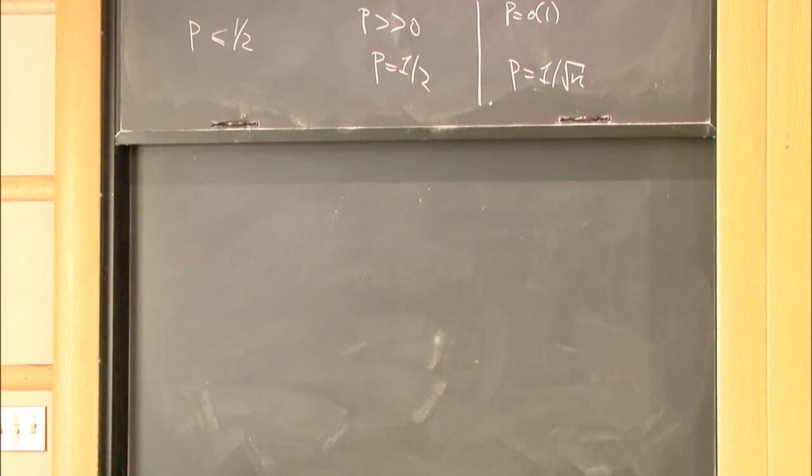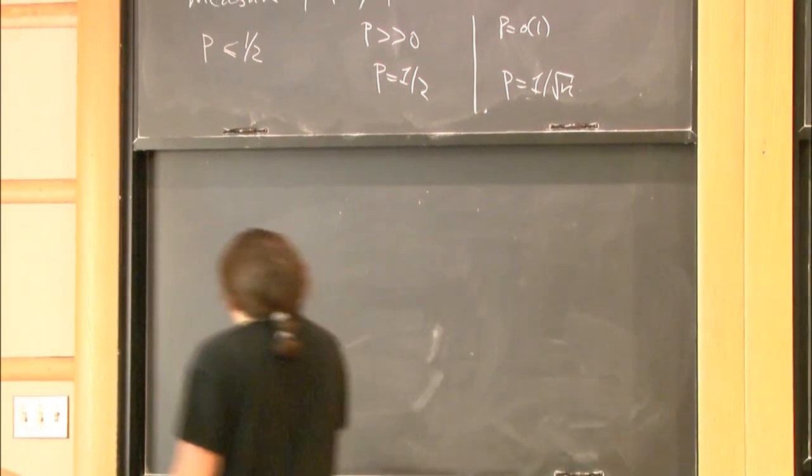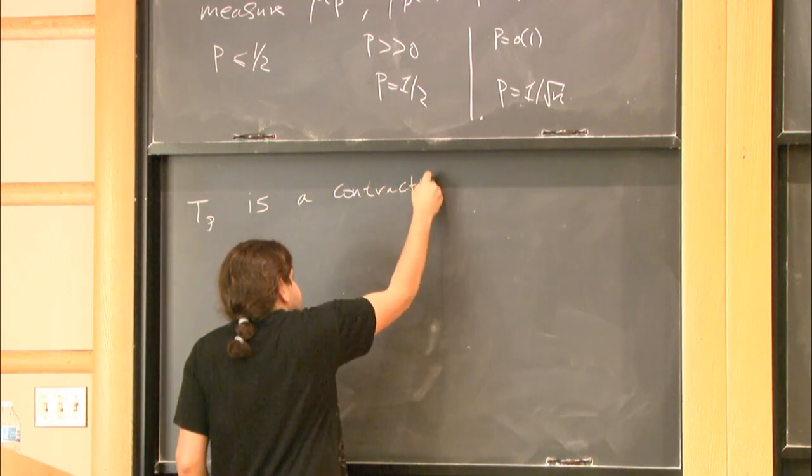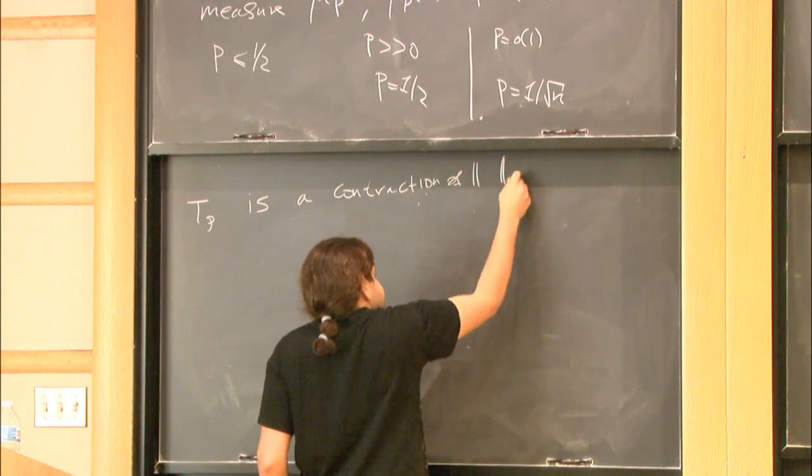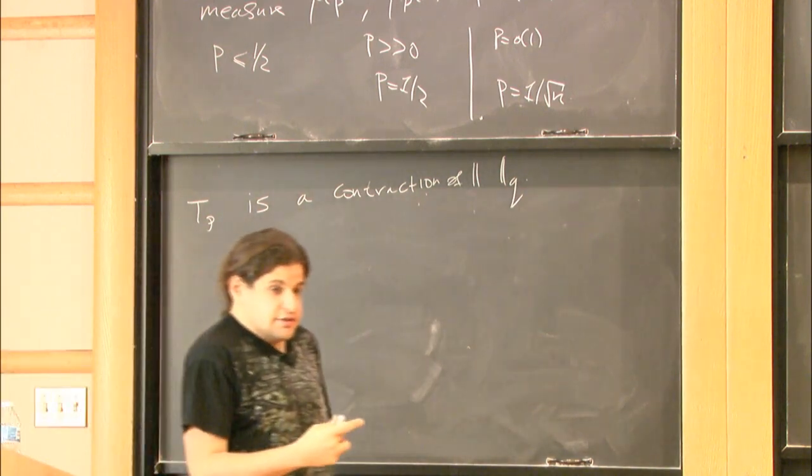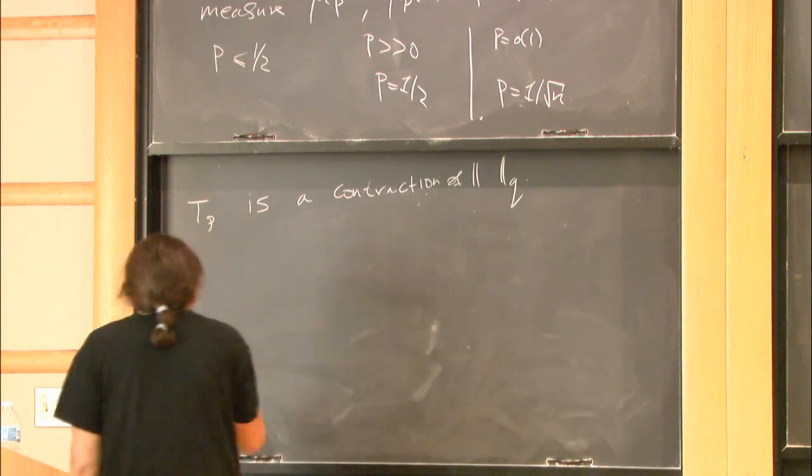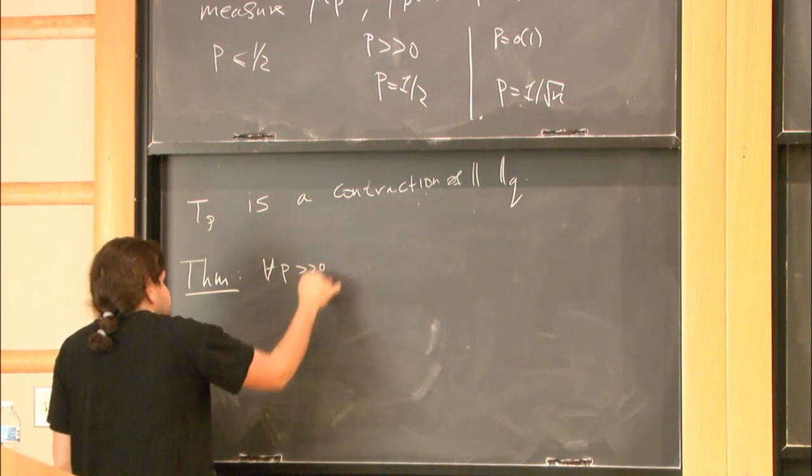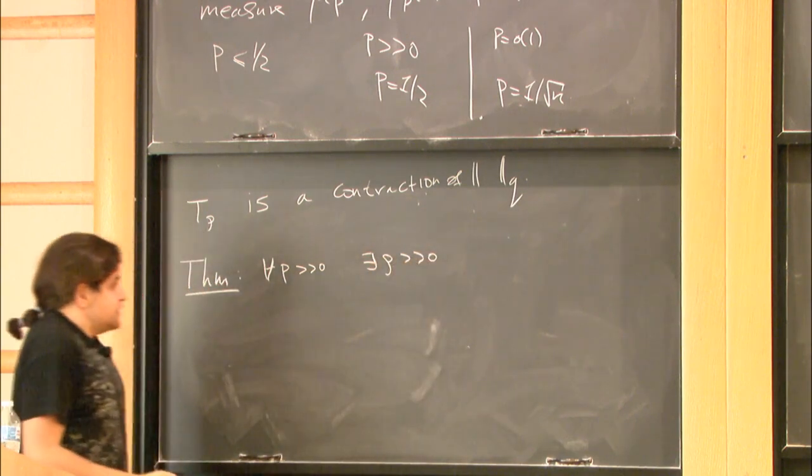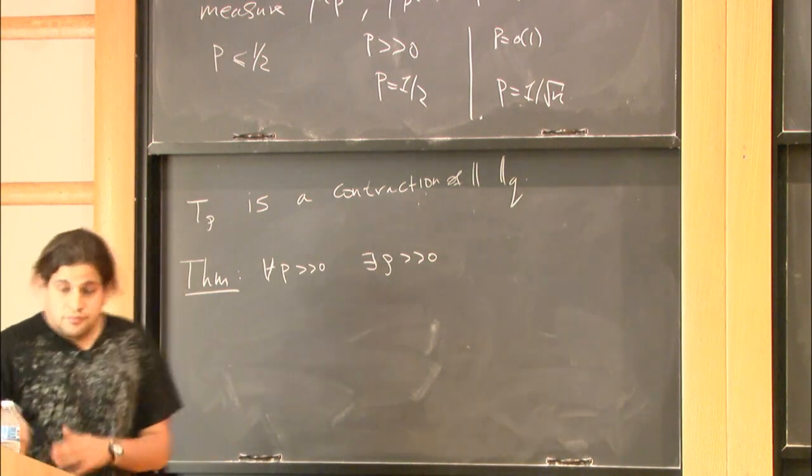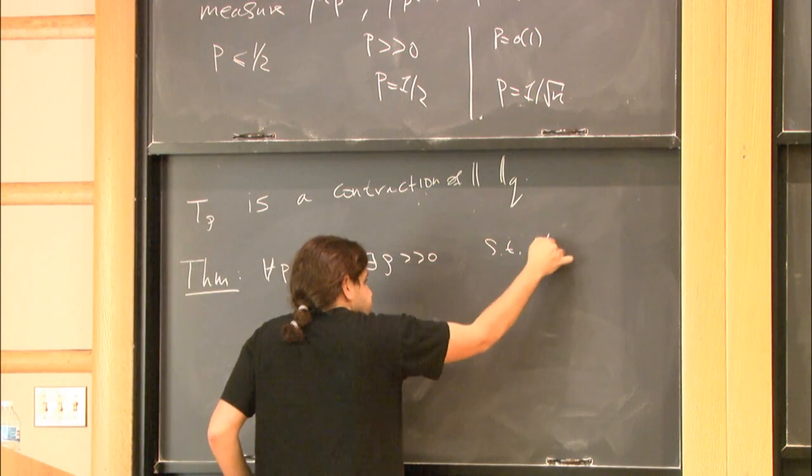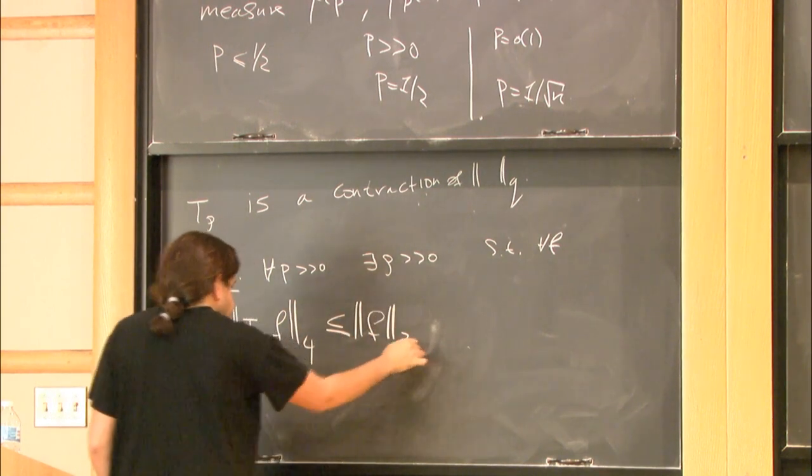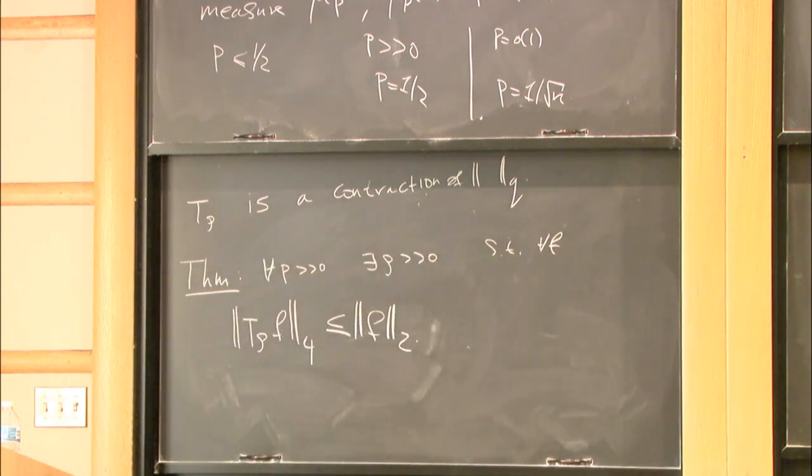This is an averaging operator, and therefore, it can only decrease norms. Namely, T rho is a contraction of any LQ norm. What hypercontraction says is that it is, in fact, stronger. Here is the hypercontractive theorem. For all p that is bounded away from zero, there exists rho that is bounded away from zero, such that T rho is actually a contraction from L4 to L2.